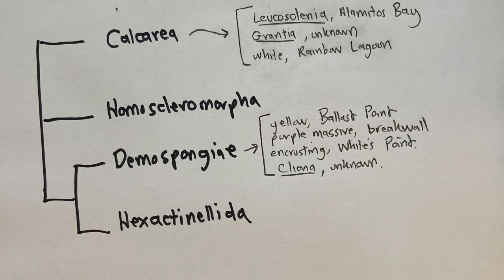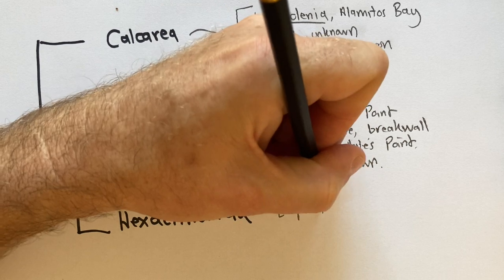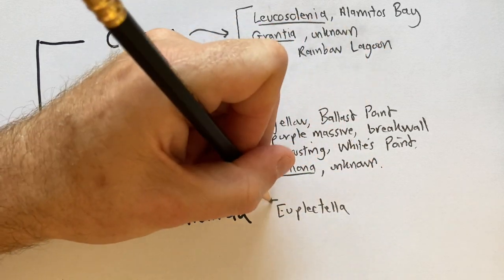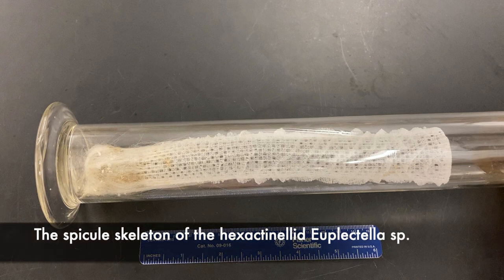Here are the spicules of the only hexactinellid sponge that we have to look at today, Euplectella. So the spicules, which are siliceous, are mostly fused to each other to make a very rigid skeleton with a really well-defined pattern.